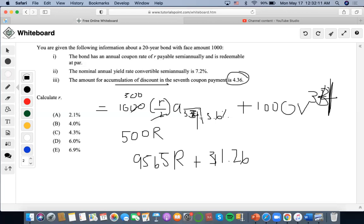19.43 times 500R, so it's going to be 9715R. Then it's going to be 1,000, uh, times 1.036 to the negative 34, so that we get plus 300.447.